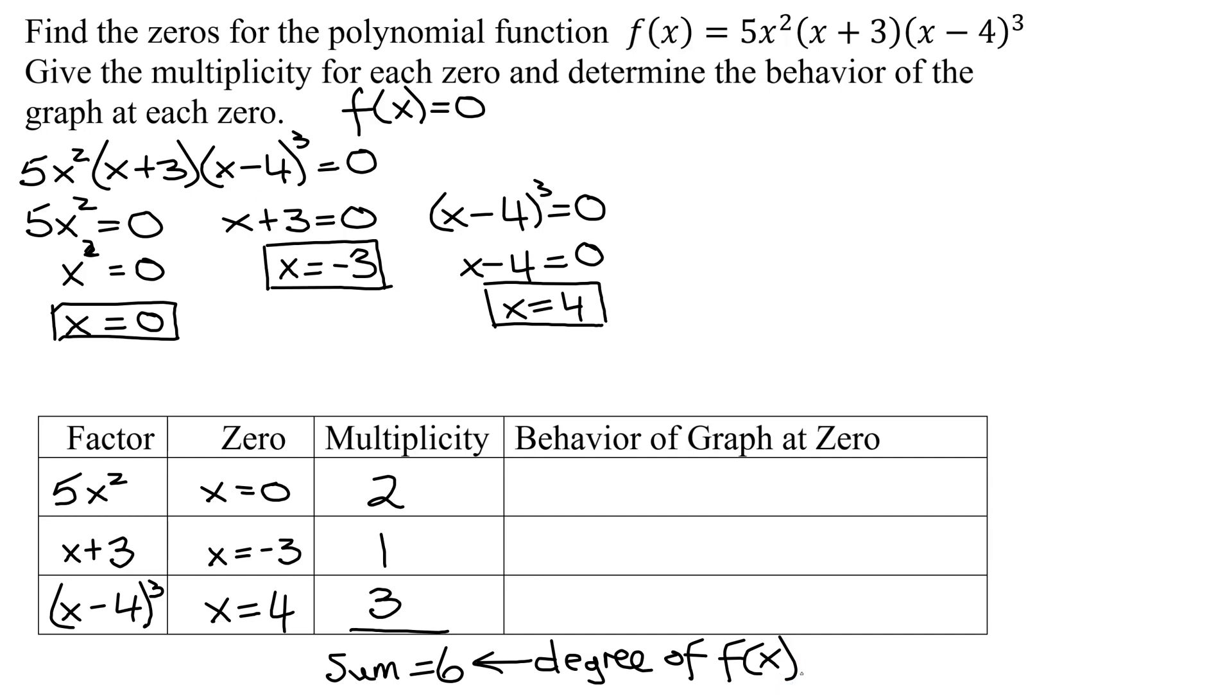And lastly, we need to look at the behavior of the graph at zeros. If the multiplicity is even, then the graph is going to touch the x-axis and turn around at that zero. If the multiplicity is odd, then the graph is going to cross the x-axis at those two zeros.